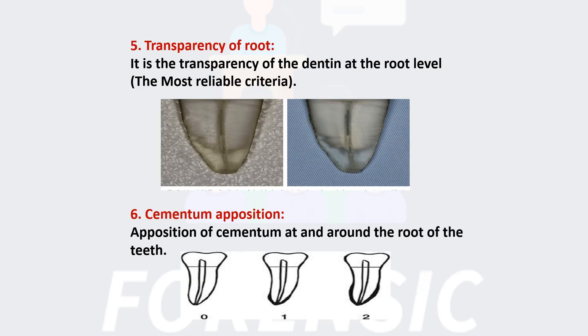The fifth criterion is Transparency of Root. In this, the dentin becomes transparent at the root level. It is the most reliable criteria.